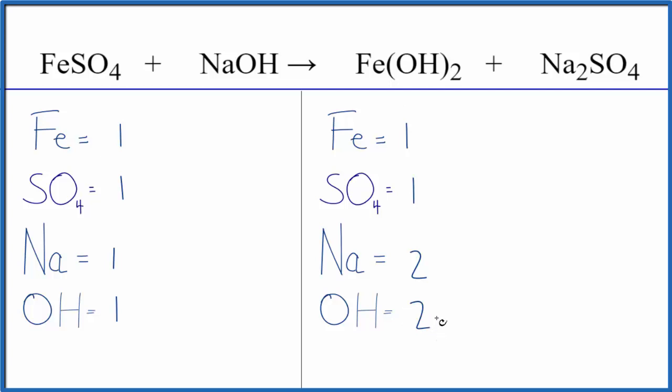So to balance the sodiums, it looks like if we put a 2 as our coefficient in front of the NaOH, 1 times 2, that would balance the sodiums. And this 2 applies to everything. We have our 1 hydroxide times 2. That balances the hydroxides, and we're done.